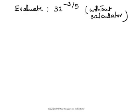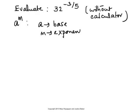Hi. Let us review some terminology before we work on this problem. In the expression a to the m, a is called the base, and m is called the exponent. So in the given problem, 32 will be the base, and negative three-fifths will be the exponent.